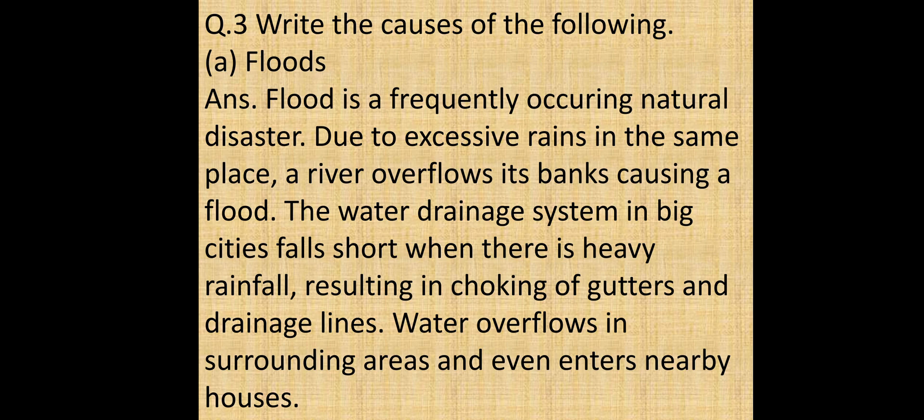Question number 3: Write the causes of the following. A. Floods. Answer — Flood is a frequently occurring natural disaster due to excessive rains in the same place, or when a river overflows its banks, causing a flood. The water drainage system in big cities falls short when there is heavy rain, resulting in choking of gutters and drainage lines. Water overflows in surrounding areas and even enters nearby houses.